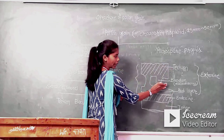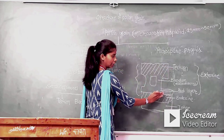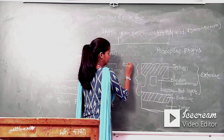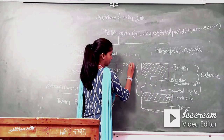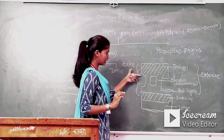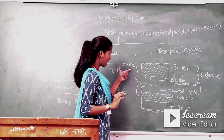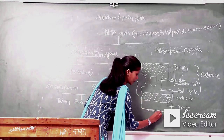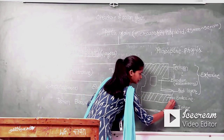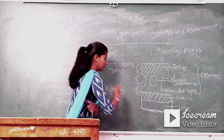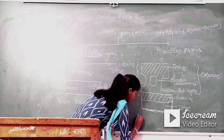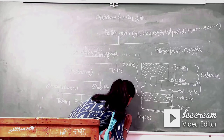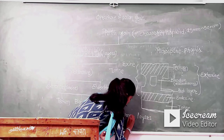Tectum, baculum, foot layer, and nexine together comprise the exine. Below exine, the intine is present. So these are the various layers of pollen grain.